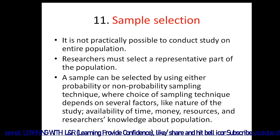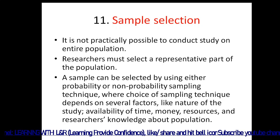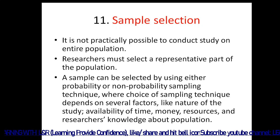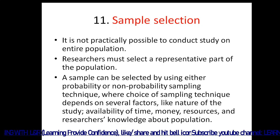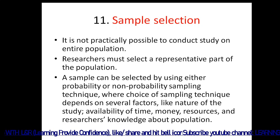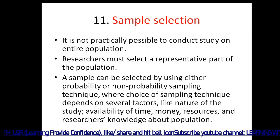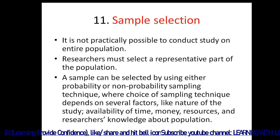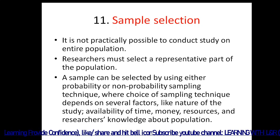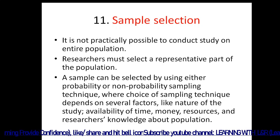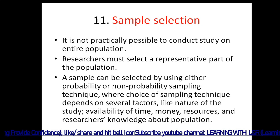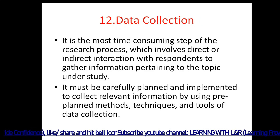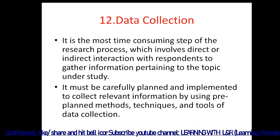The next step is sample selection. It is not practically possible to conduct a study on the entire population, so researchers must select a representative part of the population that is reachable. A sample can be selected using either probability or non-probability sampling techniques, depending on factors like nature of the study, availability of time, money, resources, and the researcher's knowledge about the population.